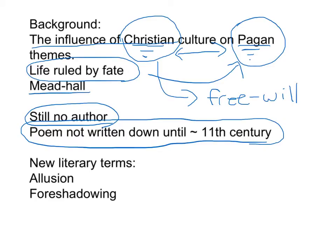We again see the Mead Hall — a place that emphasizes alcohol and entertainment above all else. New literary terms to be familiar with: allusion, a reference to a literary or historical person, place, or thing; and foreshadowing, a subtle hint at future events throughout the story. If you have your textbook available, we're going to begin on page 41 and progress throughout.